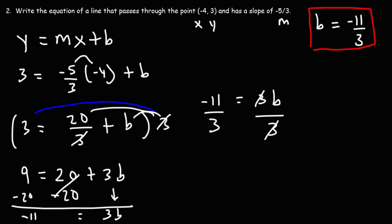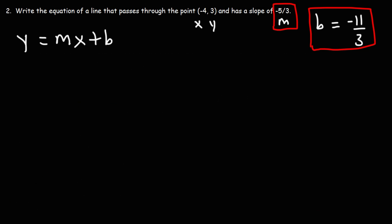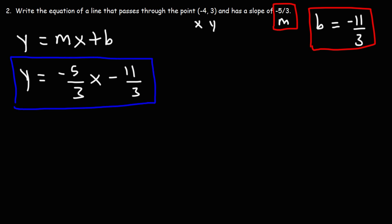Now that we have b and the slope, we can write the equation of the line in slope-intercept form: y = (-5/3)x - 11/3. That's the answer in slope-intercept form. We can also write the equation in standard form and in point-slope form. Let's first convert from slope-intercept to standard form by multiplying everything by 3.